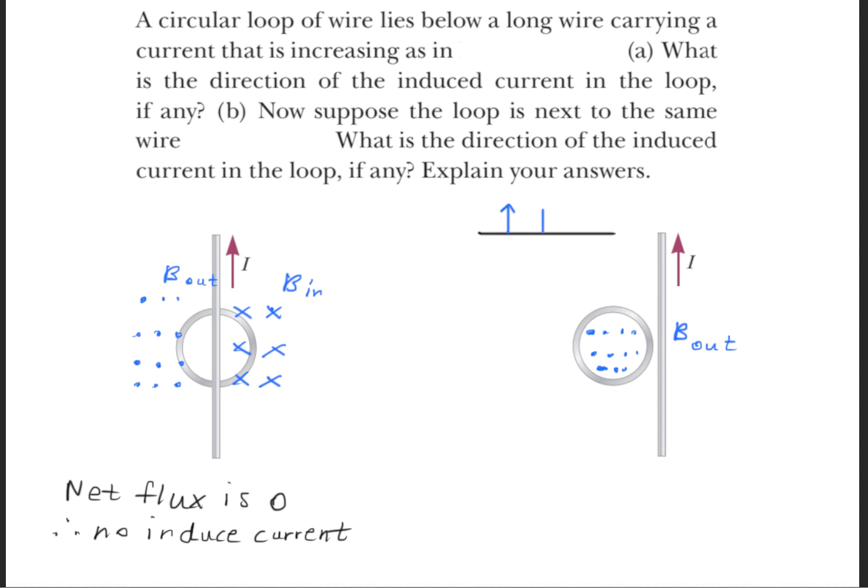Now, as the current increases, this B field is going to increase. Now there needs to be a force that opposes that change, otherwise it would not hold true to the conservation of energy. So we have an induced current that will form to counteract the change in flux.